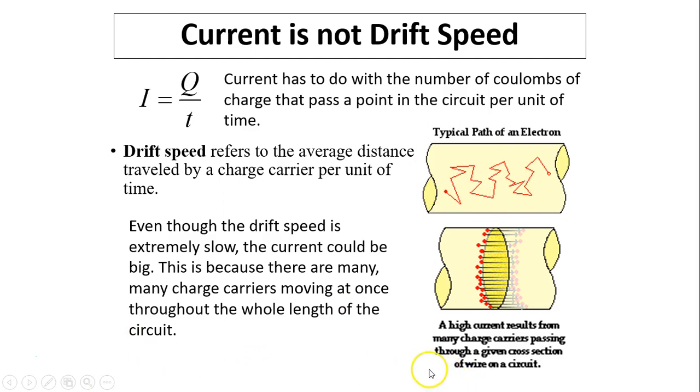So high current results from many charge carriers passing through a given cross-section of wire on the circuit. So even though the drift speed is extremely slow, the current could be big. This is because there are many, many charge carriers moving at once throughout the whole length of the circuit.